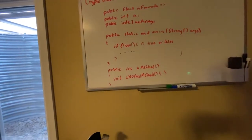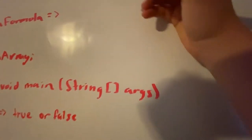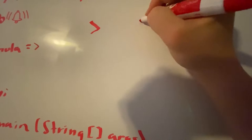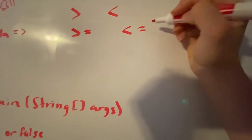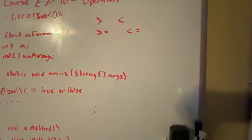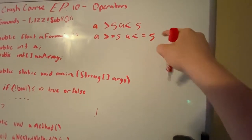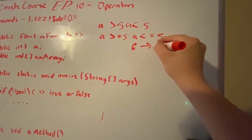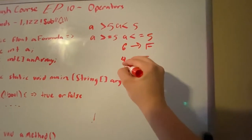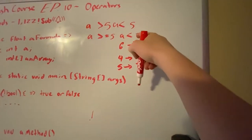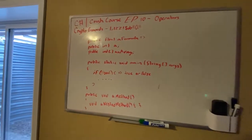We also have greater-than, less-than, greater-than-or-equal, and less-than-or-equal operators. Those are pretty self-explanatory. If a is six then greater-than-five is false; if it's four it'd be true; if it's five it'd also be true because of the equals part.